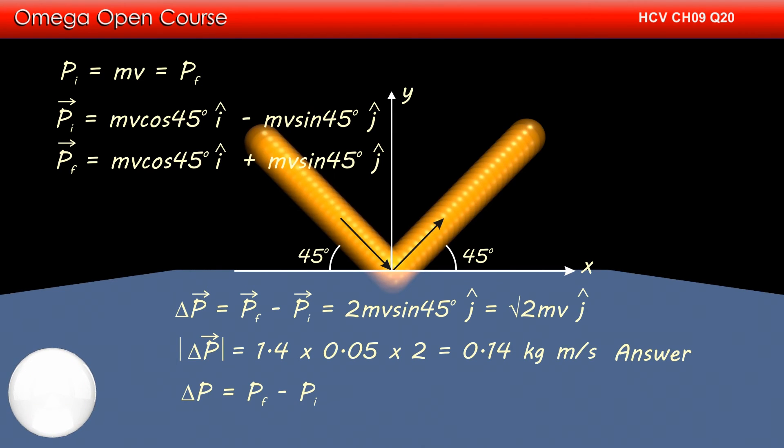For change in magnitude of momentum of the ball, we need to subtract the initial magnitude of the momentum from the final magnitude of the momentum. But the magnitude of the initial and final momentum is same. Therefore, the change in magnitude of the momentum is zero. This is answer to part B of the question.